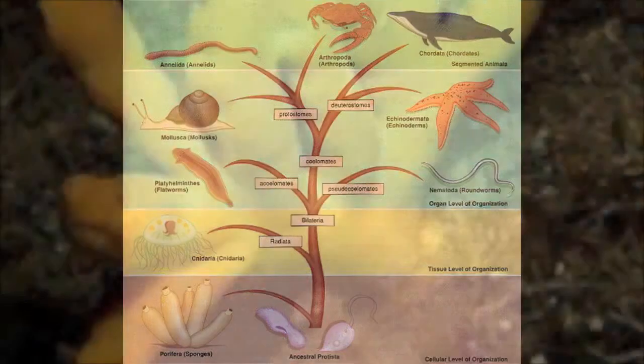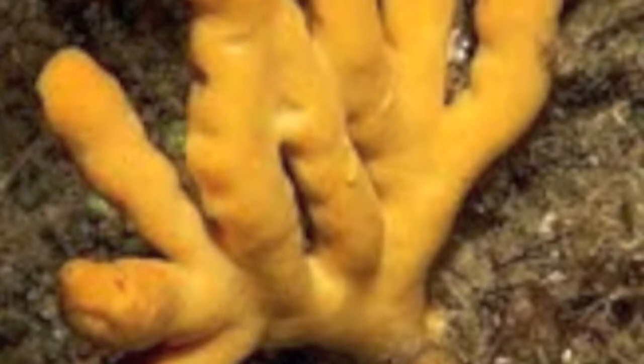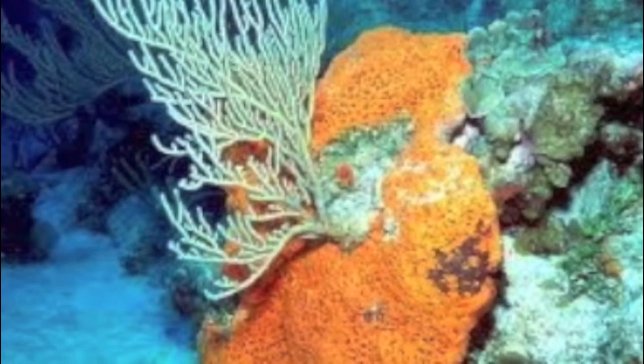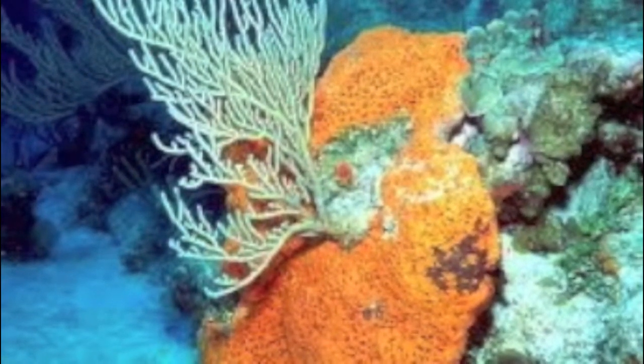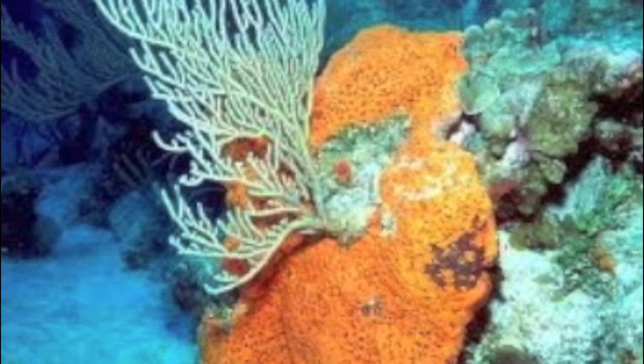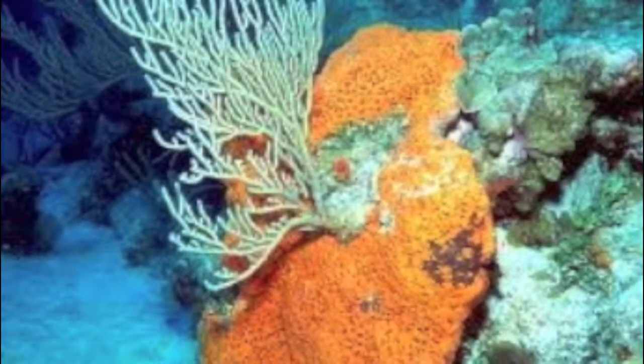The first phylum is Porifera. Porifera are what we know as sponges. Their habitat is generally marine or saltwater. These sponges have a porous body and are porizoans. They don't have any tissues — they are basically groups of cells connected together and filled with holes throughout their bodies. These pores, or holes, allow water to pass through.